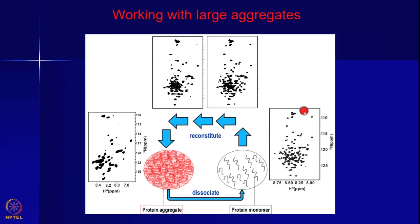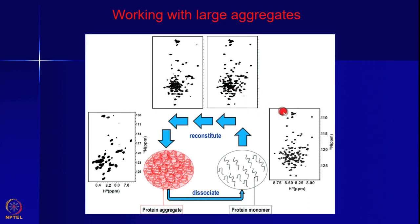That will give you all the expected peaks in this protein. We then assign all of these using standard methods discussed earlier. Now what you do is start reconstituting slowly — changing the conditions gradually — and monitor the HSQC spectrum as you go through the process of association.